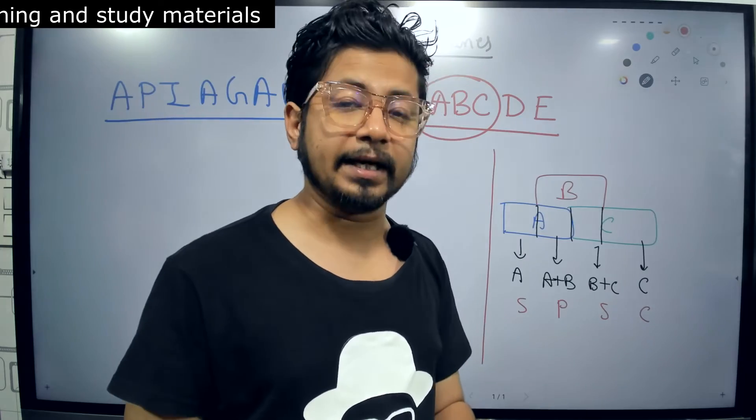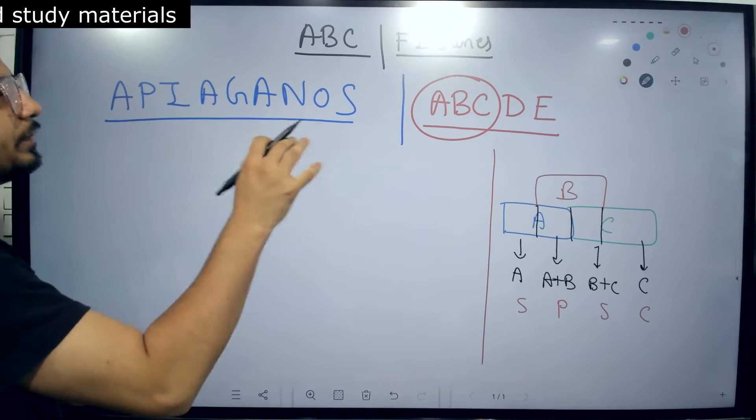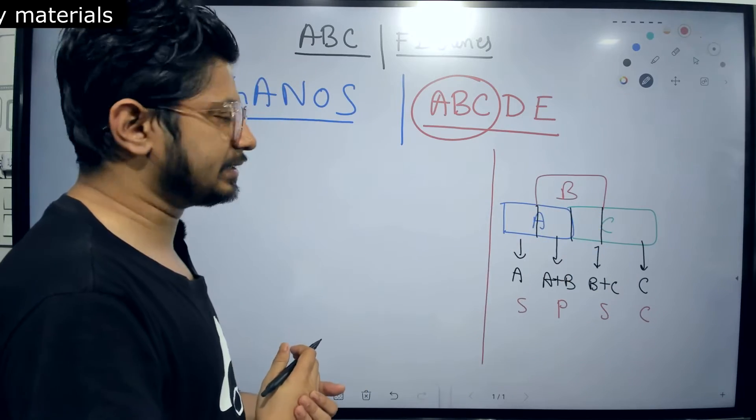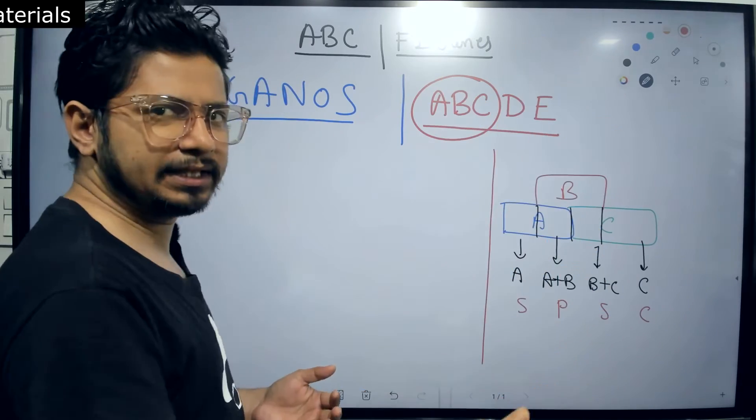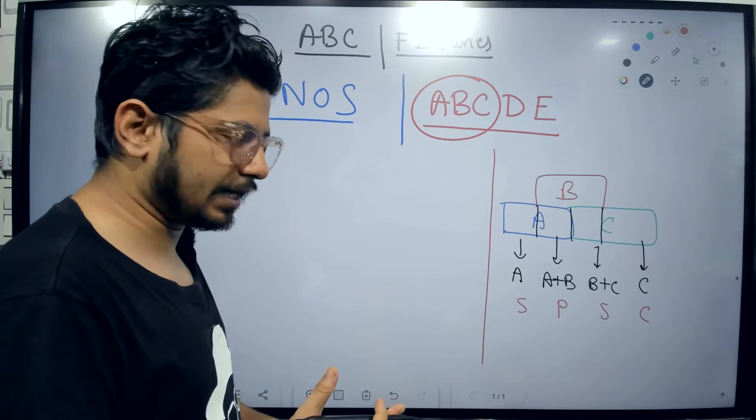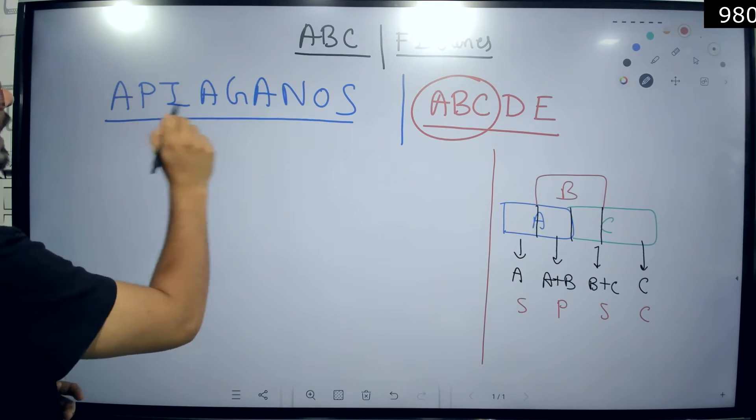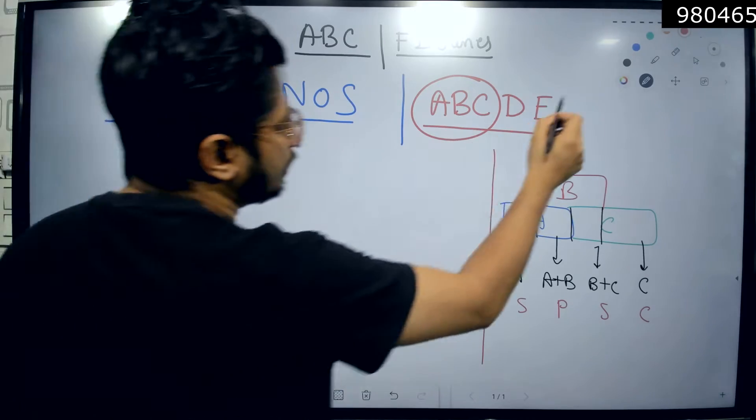This is important for CSIR NET, but one more thing is important: the name of the different genes that are related to this floral meristem identity, not only just ABC but the name of different kinds of genes like Apetala, Pistillata, and all these different names.